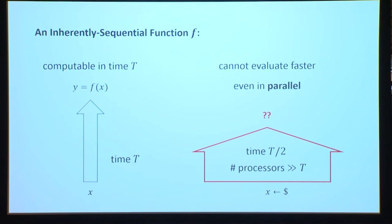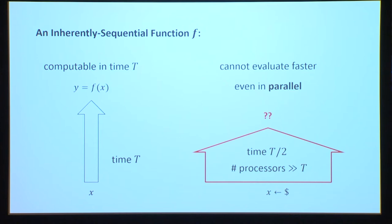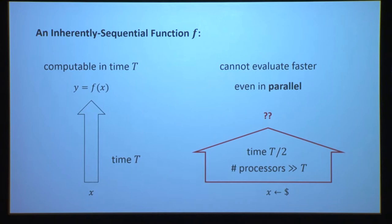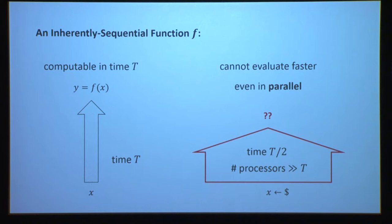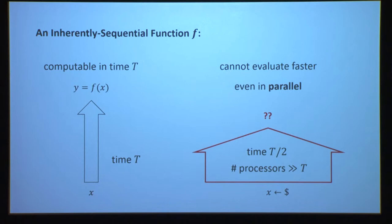The number of processors can be very large — we allow it to be larger than t — but it should not be exponential. We only want hardness against algorithms that are still efficient. In terms of parameters, every application will require a different delay parameter t, so we want to design functions where we can tune t as we like. The gap between the time t to compute the function and the time in which you should not be able to compute it doesn't have to be t over 2; our goal is to design this inherently sequential function where the gap is as small as possible.